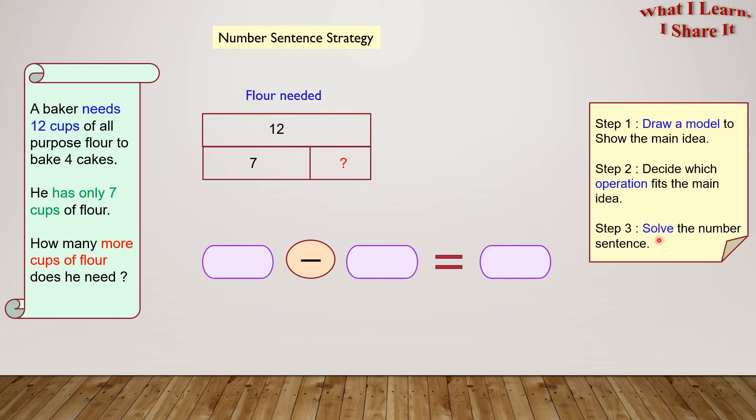Step 3. Solve the number sentence. We can write 12, which came from here, minus 7, which came from here, equals 5. So, baker needs 5 more cups of flour. Yay! We solved the problem!